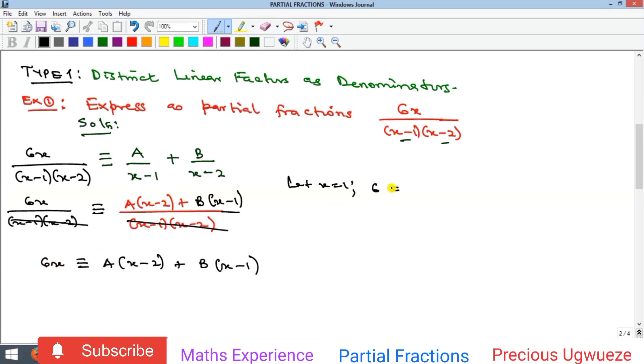I will get zero. So that's going to give me 6 equals minus A. Therefore, A alone is equal to minus 6. To get B now, I will eliminate A. To eliminate A, I will make x equal to 2.